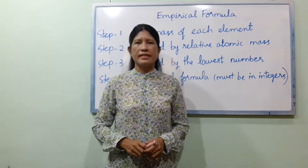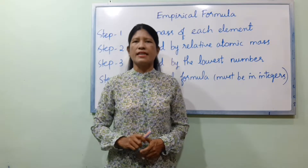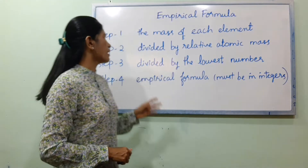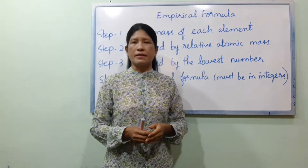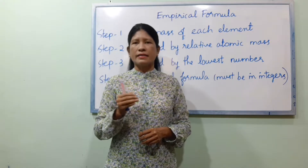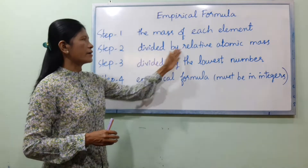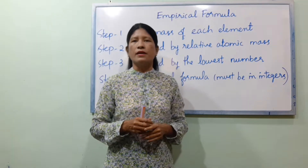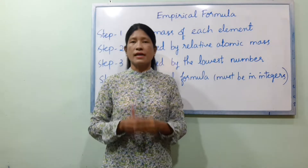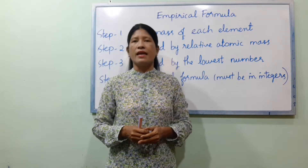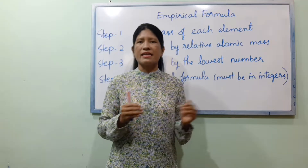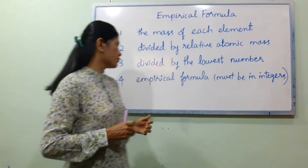The Empirical Formula uses the mass of each element. Step 1 is to find the mass of each element. Step 2 is to divide by the related atomic mass. Step 3 is to divide by the lowest number. Step 4 is to divide by the elements to get the empirical formula.